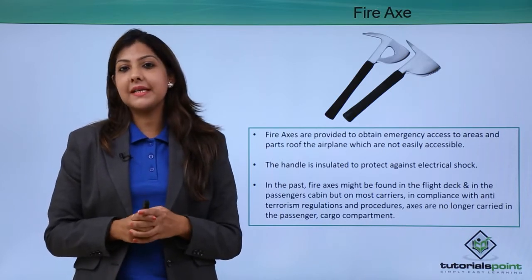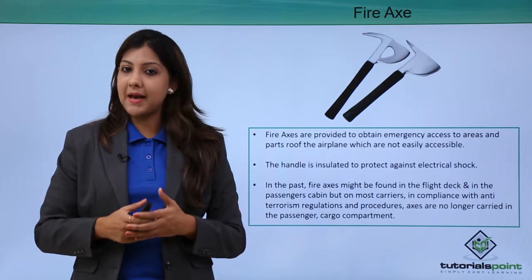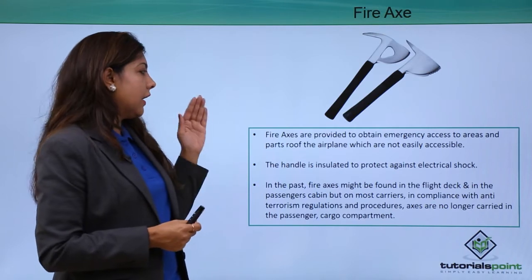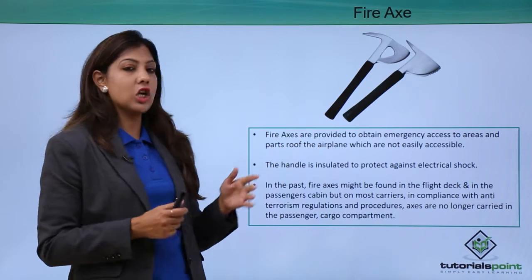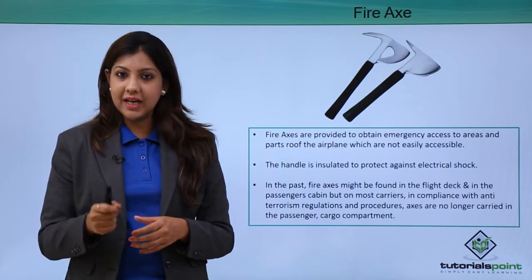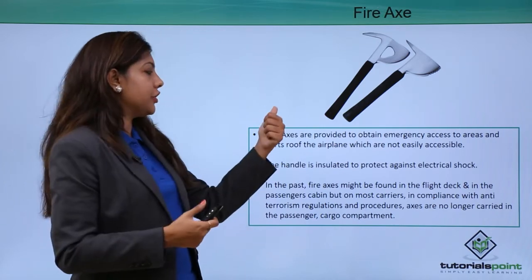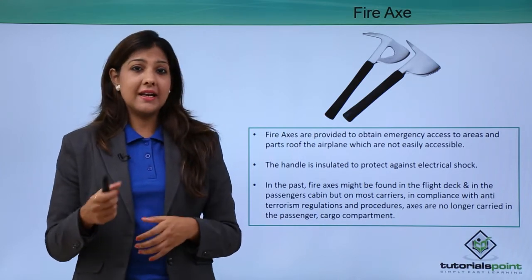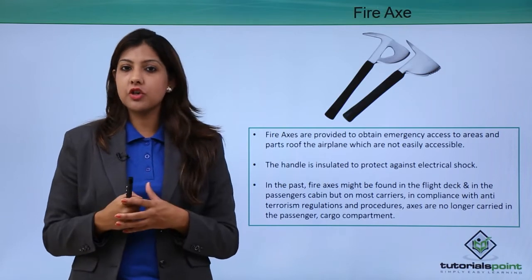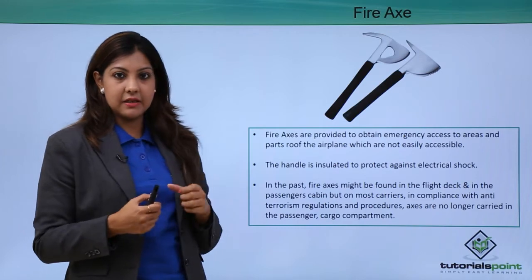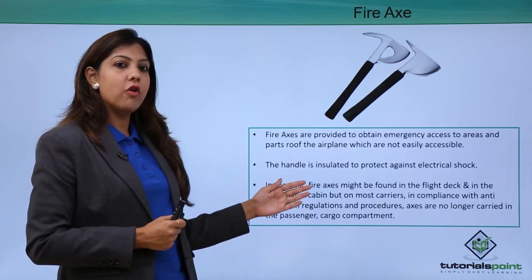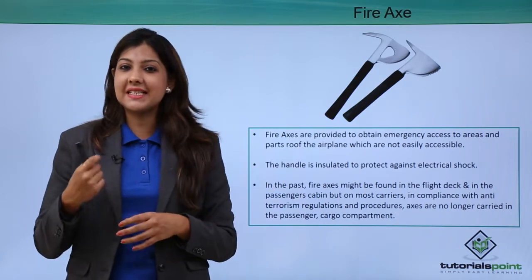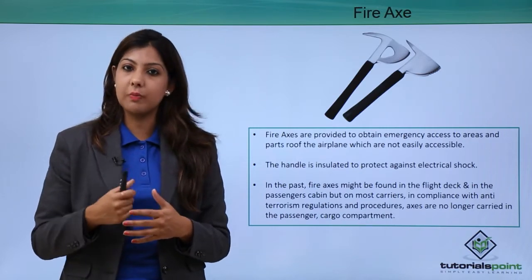The fire axe is placed inside the cabin but in an area not easily seen by passengers, as any passenger might misuse it since it is very sharp. It provides emergency access to parts of the aircraft not easily accessible by bare hands. The handle is insulated to protect against electric shock when handling electrical appliances. For passenger safety, the fire axe is now often kept in the flight deck or cockpit area.